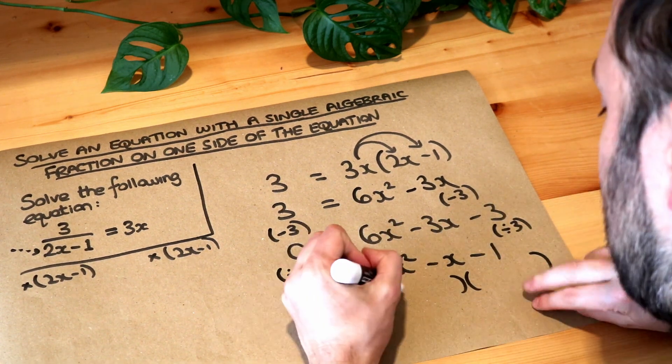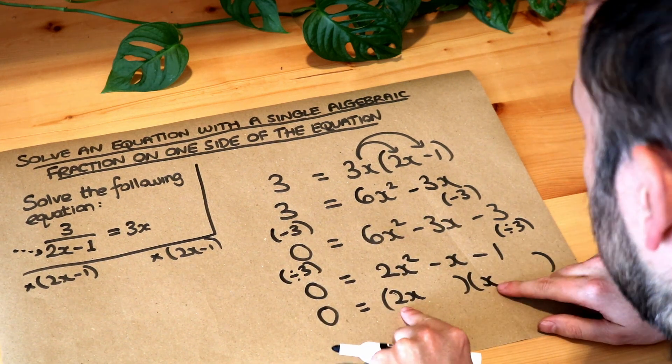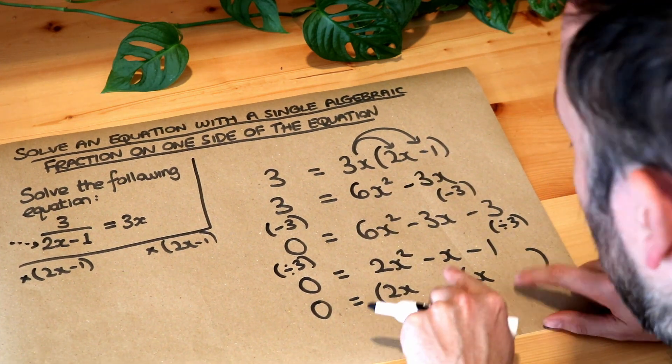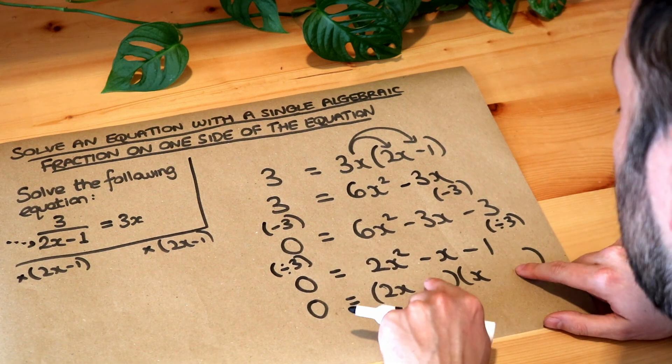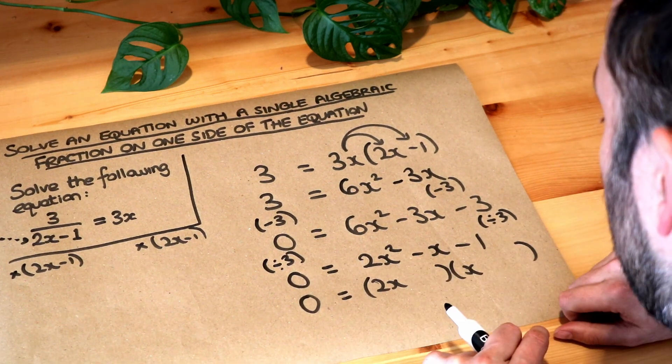I can see that these two terms are going to be 2x and x in the factorization, because 2x times x in expansion will give you the 2x squared. I also know that these two numbers have to be 1 and minus 1 in some order, because then 1 times minus 1 will give you this minus 1 term on the end.